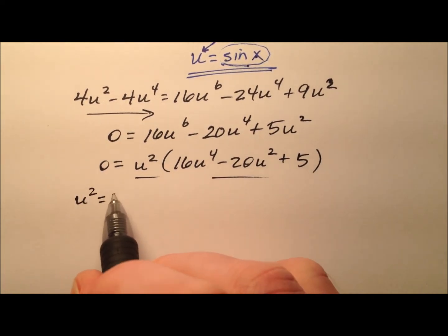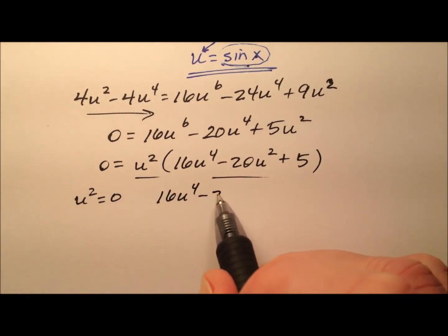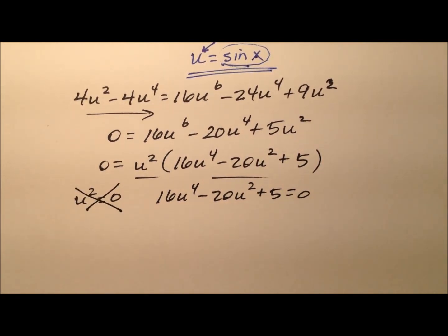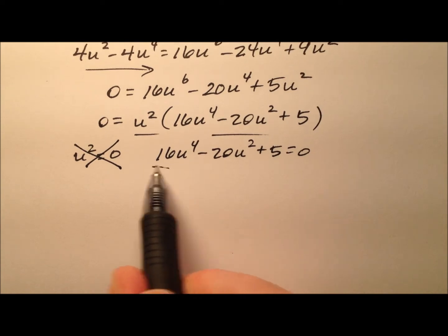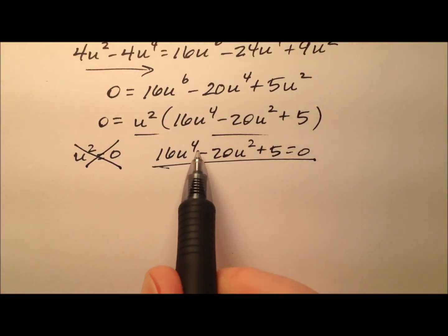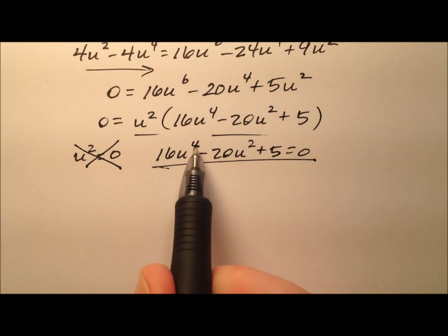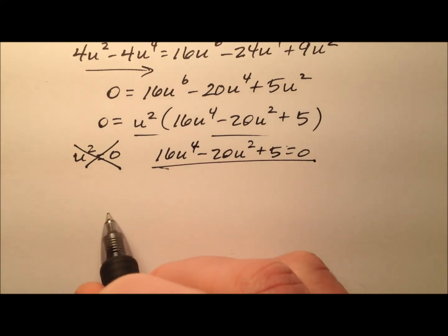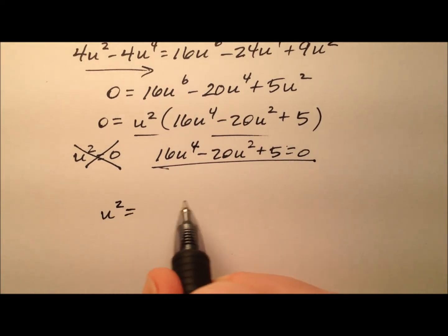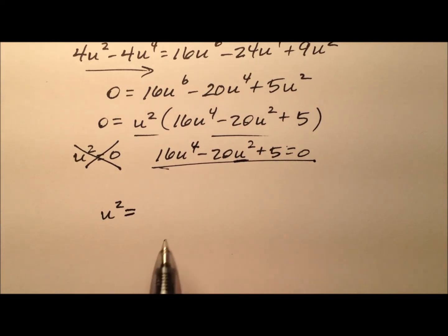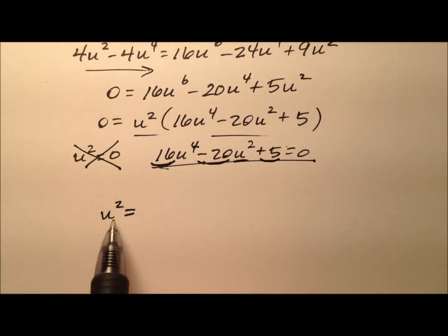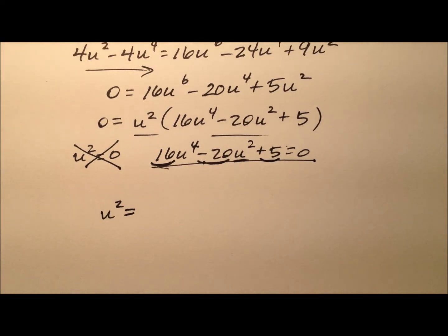Setting each factor equal to zero: u squared equals zero isn't going to give me anything I care about, so I'll ignore that. The remaining factor 16u to the fourth minus 20u squared plus 5 equals zero is quadratic in nature, with exponents 4, 2, and 0. I can use the quadratic formula on this, solving for u squared using coefficients a equals 16, b equals negative 20, and c equals 5. Taking the square root of both sides will then give u, which is our sine of 72.